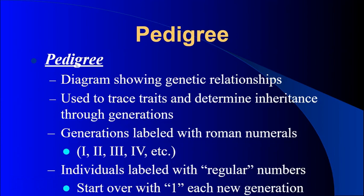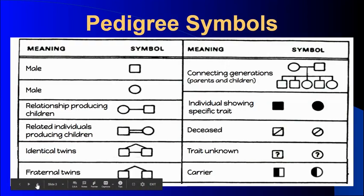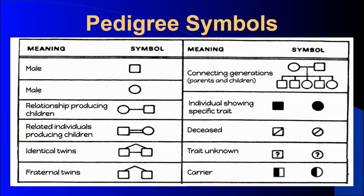When we have a pedigree, the generations are labeled with Roman numerals, and the individuals are labeled with regular numbers. With each new generation, you start numbering the individuals from one. This chart shows us the different pedigree symbols and what they all mean.